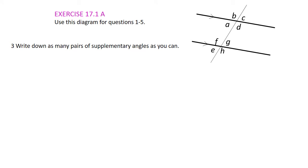Write down as many pairs of supplementary angles as you can. Supplementary angles are angles that add up to 180 degrees. In this example, we could have a plus f — here's angle a and here's angle f — they add up to 180 degrees.